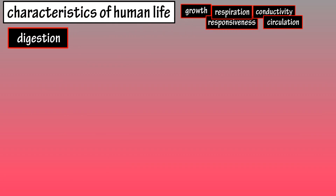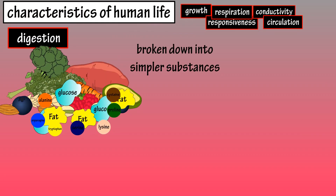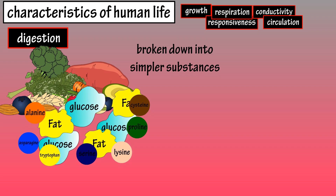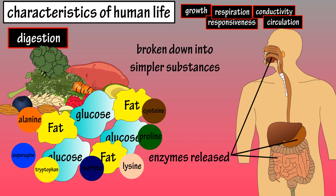Digestion is another characteristic of human life. It is the process by which food materials are broken down into simpler substances, allowing them to be absorbed by the body and used by the cells. This is done with enzymes released in the mouth, stomach, and intestines.